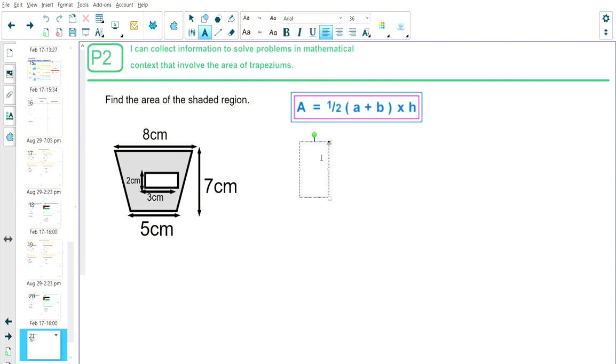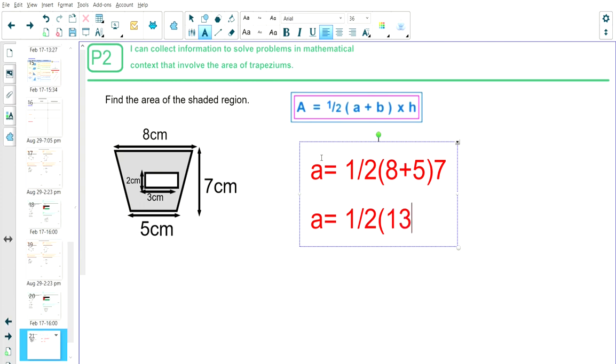So the area of the trapezium is going to be a half, open bracket, 8 plus 5, close bracket, multiplied by 7. Next, a half, open bracket, 8 plus 5 is 13, close bracket, and multiply that by 7.